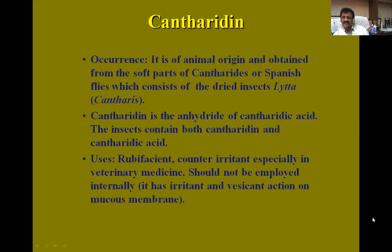Cantharidin is present in cantharis, that is Spanish fly. It is of animal origin and obtained from the soft parts of cantharides or Spanish fly, which consists of dried insects. Cantharidin is the anhydride of cantharidic acid. The insect contains both cantharidin and cantharidic acid. It is used as a rubefacient or counter-irritant, especially in veterinary medicine, and should not be employed internally because it is an irritant.